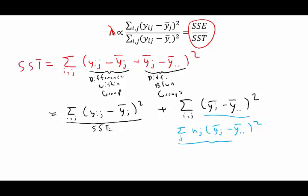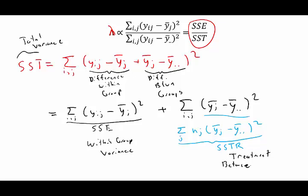This first one is exactly the SSE, but for the second term, notice there's no longer any I term inside these indices. If I do the I sum first, I will get n sub j for every j, n sub j of the exact same quantity here. This blue quantity is what we often call the sum of squares treatment, or SSTR for short. The tr stands for treatment. In this way we have this idea that the total variance is a combination of the within group variance and the between group variance.